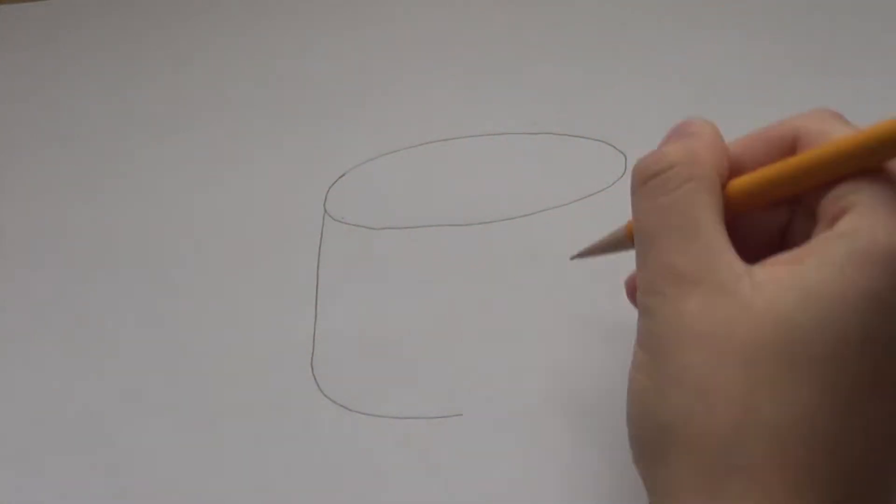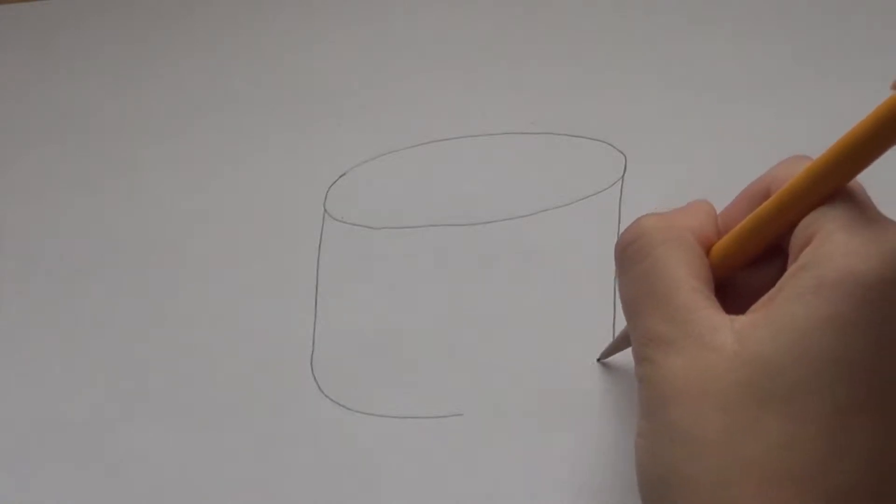So to start drawing this, I am going to sketch a cylinder. The cylinder will help make our jack-o-lantern three-dimensional.